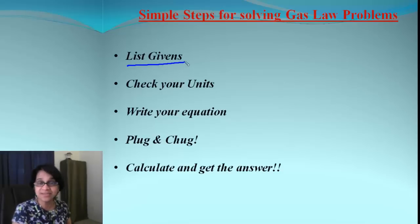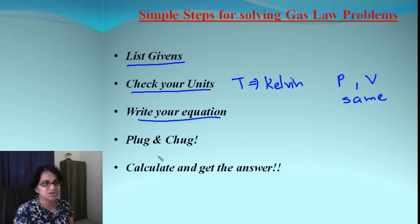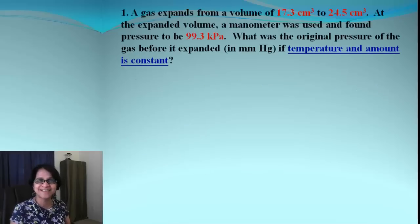And here are some simple steps as you know. Number one, you list all the given values. Then you check the units. Keep in mind, temperature must be in Kelvin and the pressure and volume must be in same units. Then you select the equation, plug and check, calculate and there we go. We can get the answer.